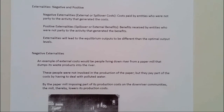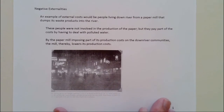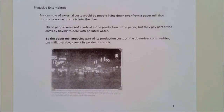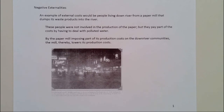First, let's look at negative externalities. An example would be people living down the river from a polluting source — say, a paper mill. Paper mills are pretty nasty facilities; they dump a lot of waste products into the river — foamy, smelly, not nice. That flows down the river to people who did not produce or even buy the paper, and yet they're paying a fair amount of costs from that pollution. Some of the best examples of negative externalities are pollution: noise pollution, air pollution, water pollution, and dumping trash on the side of the road.